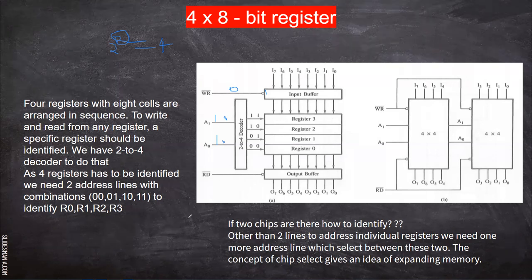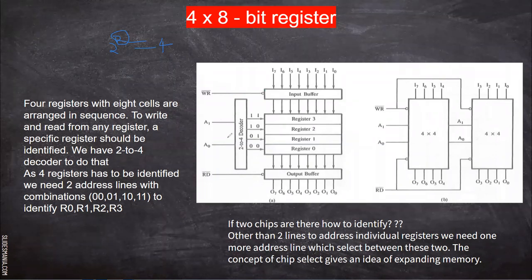Now when you are going to read, for example, I want to read information from register one. So I have to give zero-one as the address — A naught and A one as zero and one. Now the read signal is given zero, so this is enabled. The information from register one is placed on the output buffer, which in turn will come through the output lines. This can be connected to an LED or monitor where we can see the output. This is how it works.